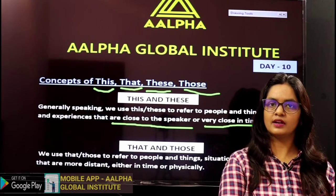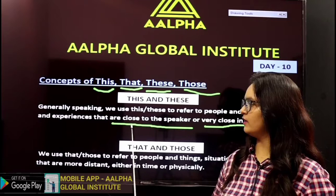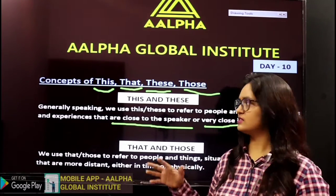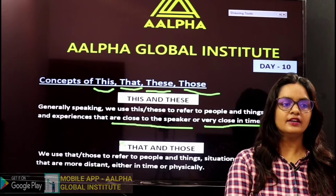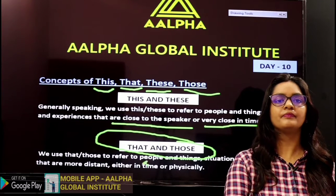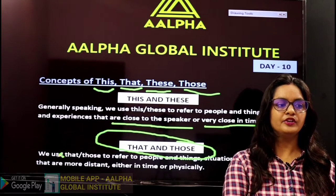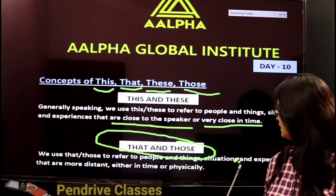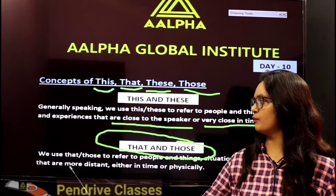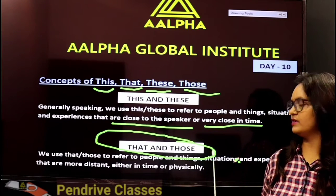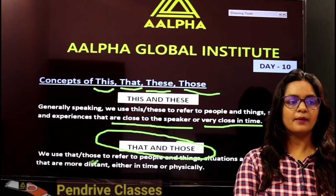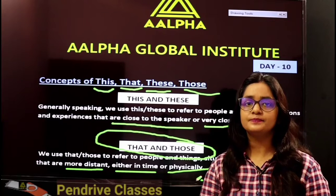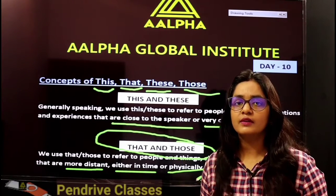Now, what about 'that' and 'those'? We use 'that' and 'those' to refer to people, things, situations, and experiences that are more distant — either in time or physically. So if something is far away from you, you use 'that' or 'those.' It's a very simple concept.